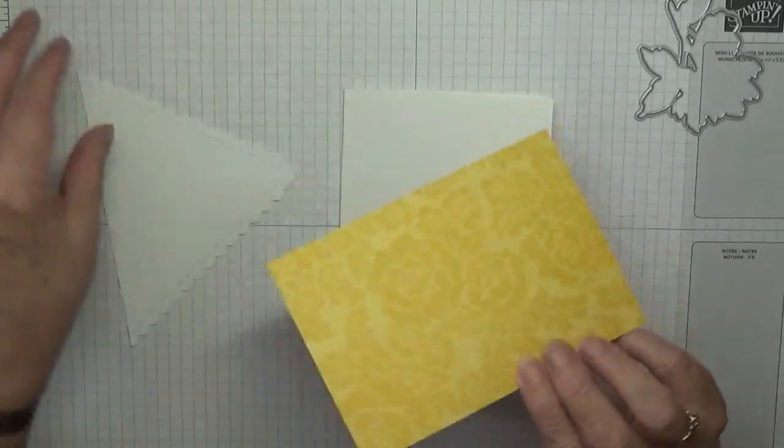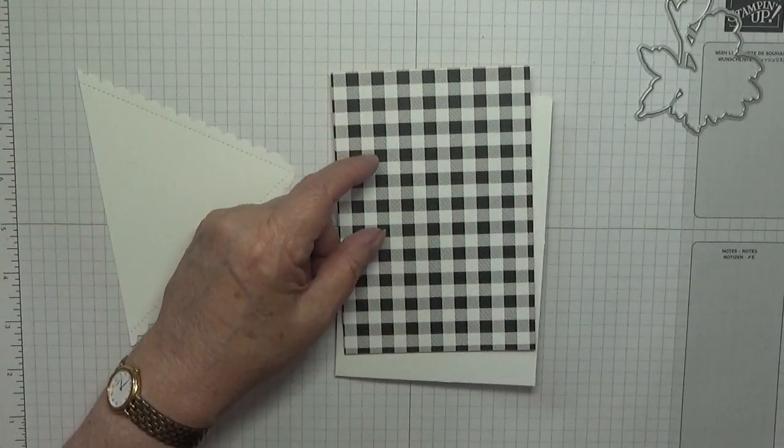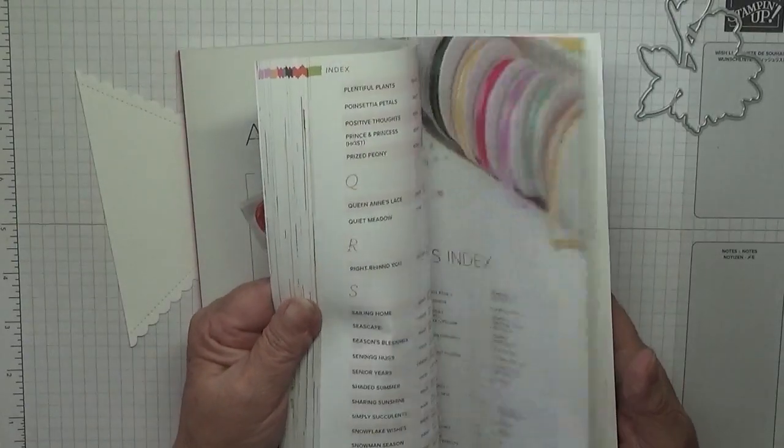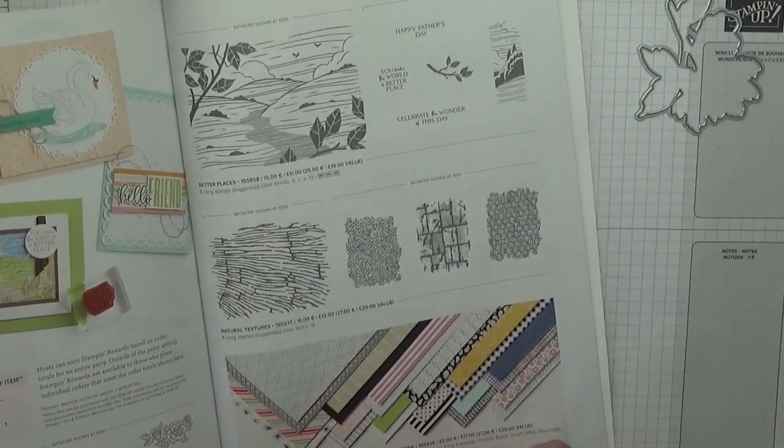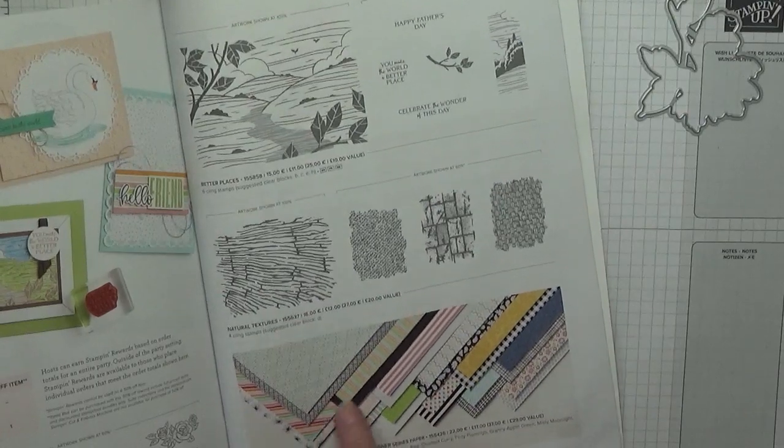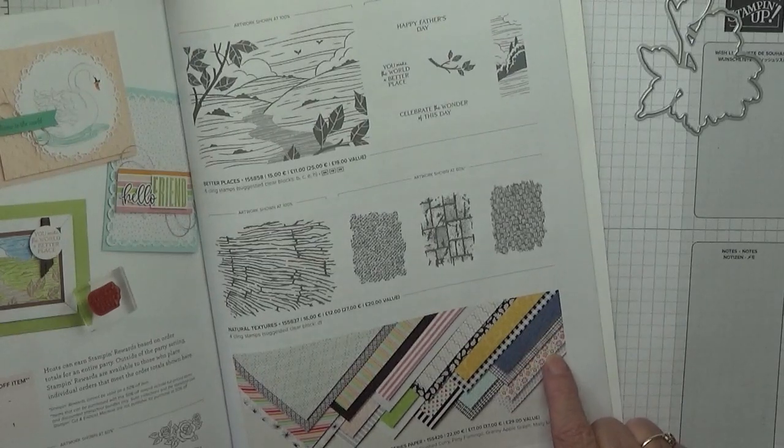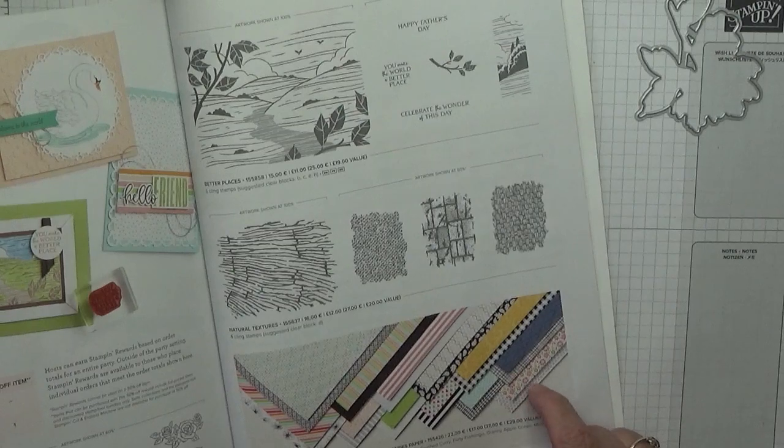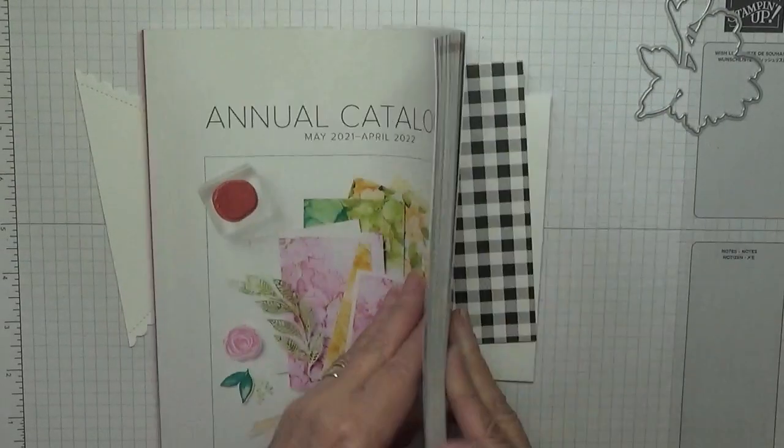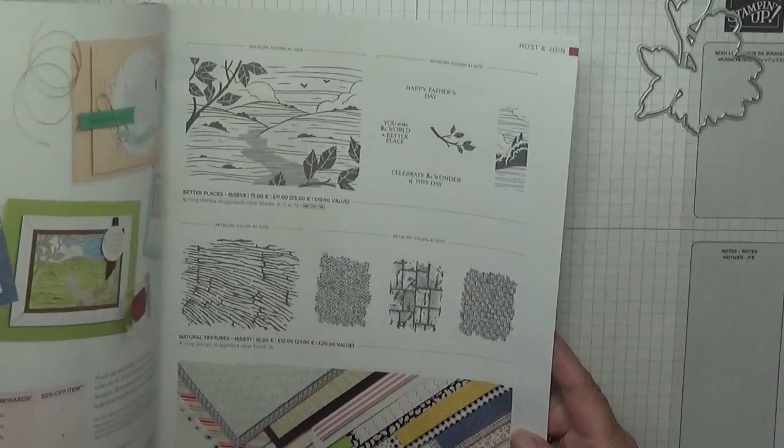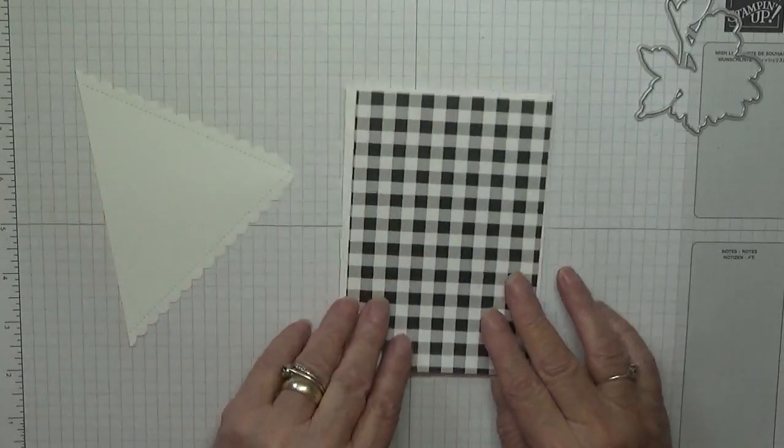I've got a piece of DSP called Pattern Party 12 by 12. This is in the hostess, so if you hold a party and your order is big enough you might get these papers free. It's 48 sheets for a value of 29 pounds which is not bad. I'm using the black and white gingham.